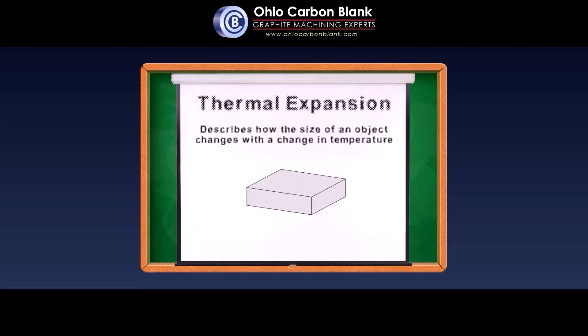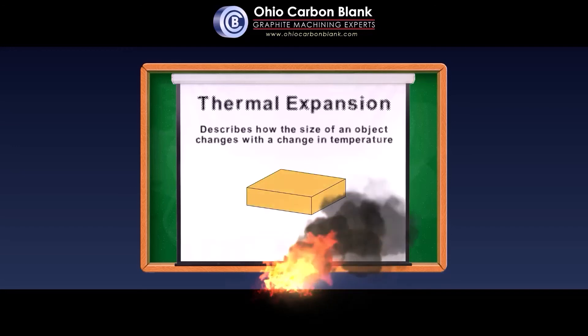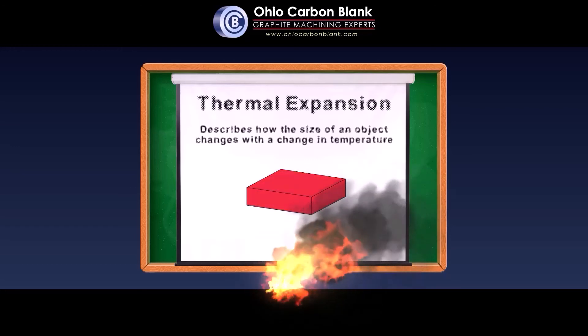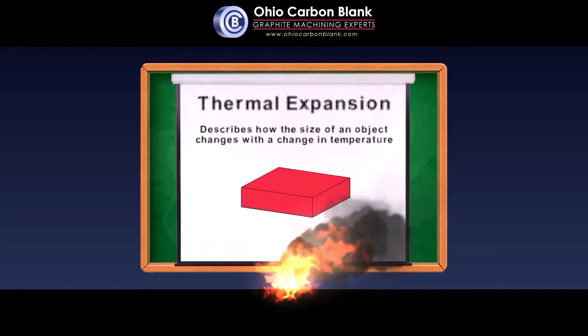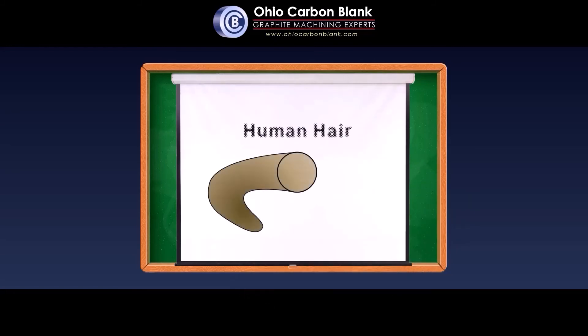Graphite is also unique due to its thermal expansion properties. Typically, when a material is heated, it expands. Graphite, however, is a material that does not exhibit much expansion when heated. In fact, the amount of expansion is typically a fraction of that of a human hair. A single strand of hair is roughly 60 to 90 microns in diameter, and the typical coefficient of expansion for graphite is often less than 10 microns per degree Fahrenheit.